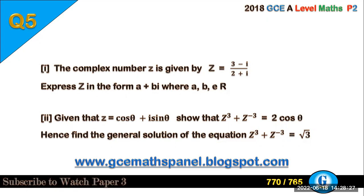The complex number z is given by z = (3-i)/(2+i). Express z in the form a + bi where a, b are elements of the set of real numbers.